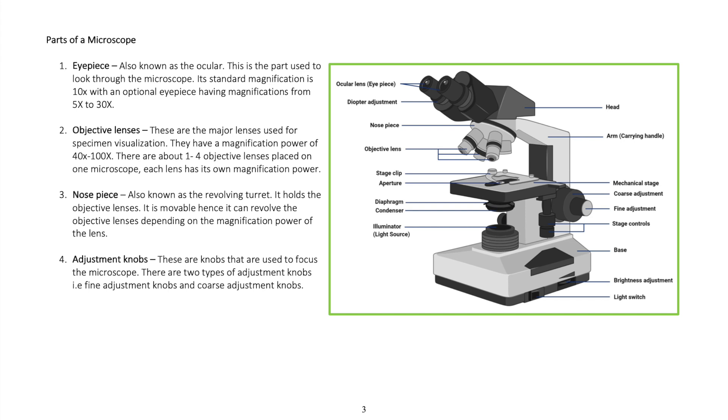Adjustment knobs are knobs that are used to focus the microscope. There are two types of adjustment knobs: fine adjustment knobs and coarse adjustment knobs.